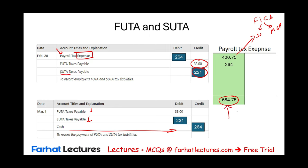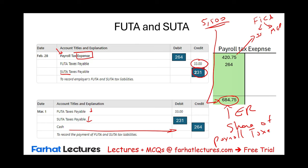Those are the employer's share of payroll taxes for this employee. The company paid the employee $5,500 and is responsible for an additional $684.75 in employer taxes. Note that in Pennsylvania and possibly one or two other states, employees also contribute a small amount — around $20 to $30 per year — to the state unemployment fund, though this is an exception.